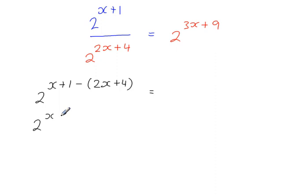And then simplifying to 2 to the power of x, we've got plus 1 and minus 2x. And this sign here, a minus and a plus, will give us a minus. And then 2 to the power of, so we have x minus 2x, which gives minus x. And there's 1 minus 4, which gives minus 3. So all of this is equal to 2 to the power of 3x plus 9.